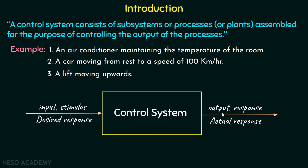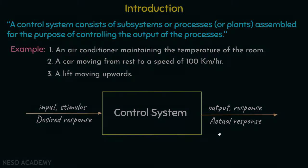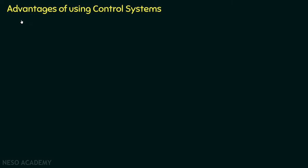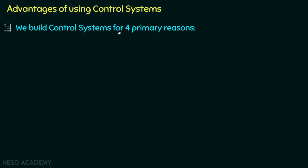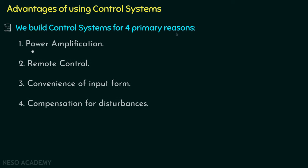Now let's move on to the question of why we should study control systems, or the advantages of using control systems. We build control systems for four primary reasons: power amplification, remote control, convenience of input form, and compensation for disturbances. We will understand all these reasons with the help of a practical example.